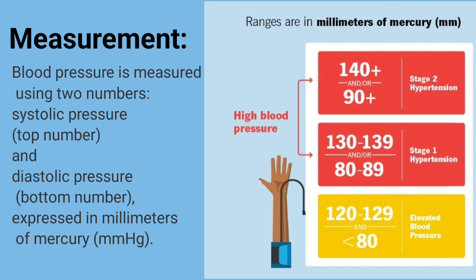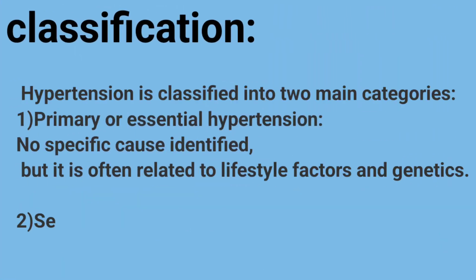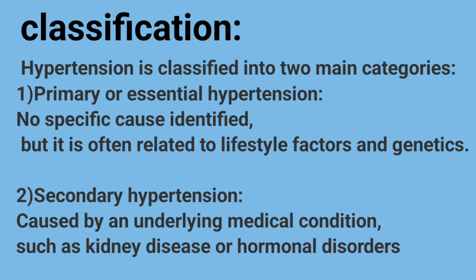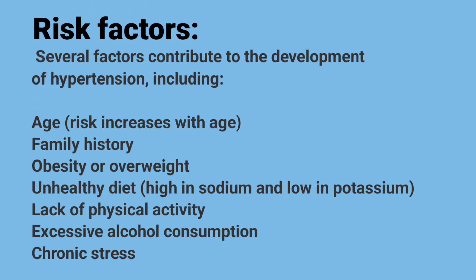The bottom number is expressed in millimeters of mercury (mmHg). Hypertension is classified into two main categories: primary or essential hypertension, where no specific cause is identified but it is often related to lifestyle factors and genetics, and secondary hypertension, caused by an underlying medical condition.